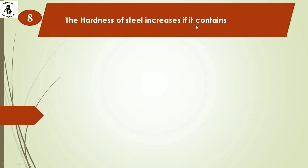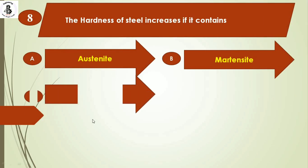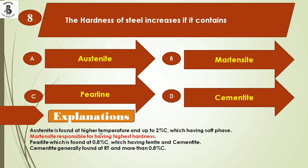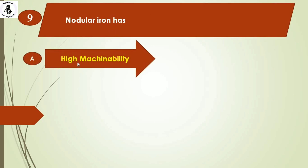The next question: the hardness of steel increases if it contains option A) austenite, option B) martensite, option C) pearlite, option D) cementite. Austenite is found at higher temperatures with up to 2% carbon and is a soft phase. Martensite is responsible for the highest hardness. Pearlite is found at 0.8% carbon (eutectoid steels) as a mixture of ferrite and cementite. Cementite is found at room temperature above 0.8% carbon. The right answer is option B, martensite.